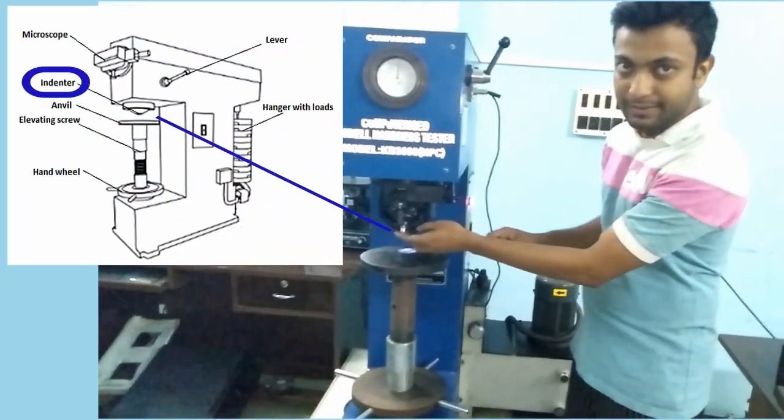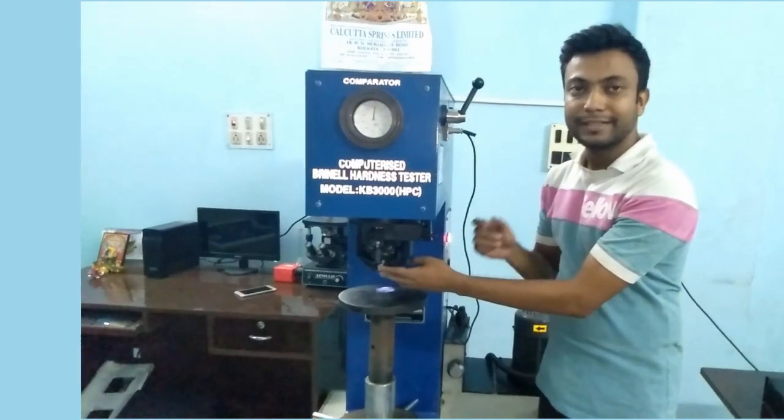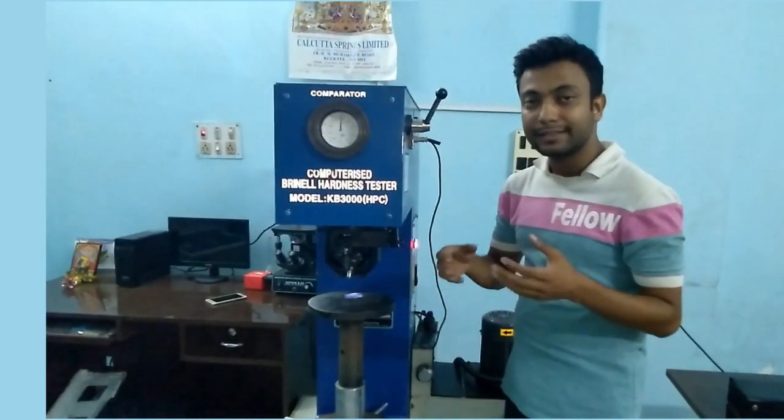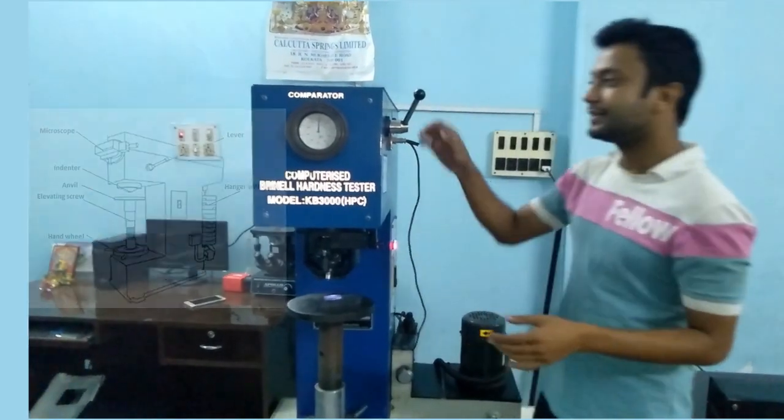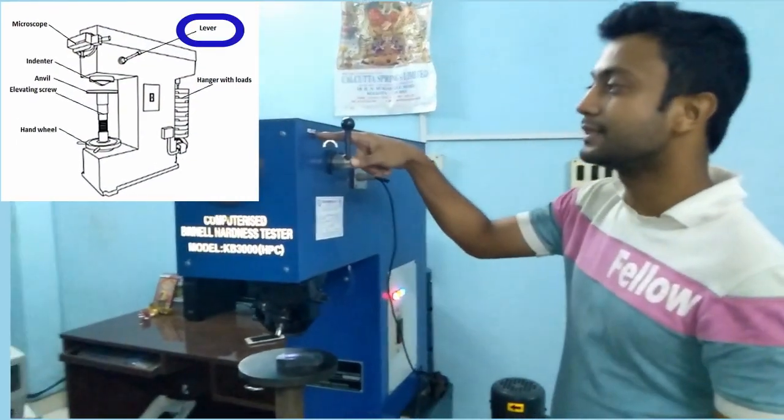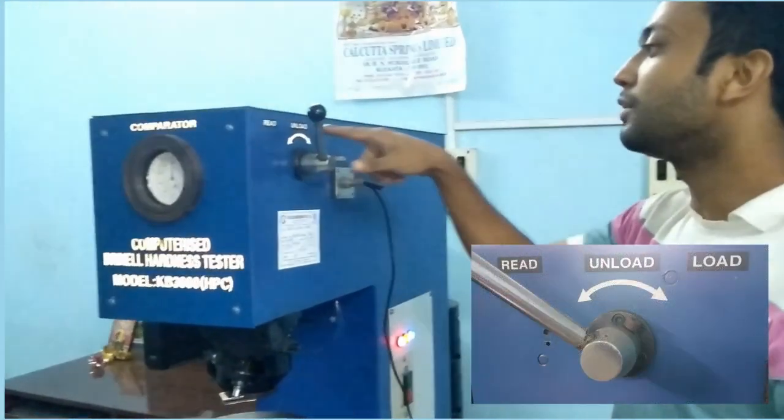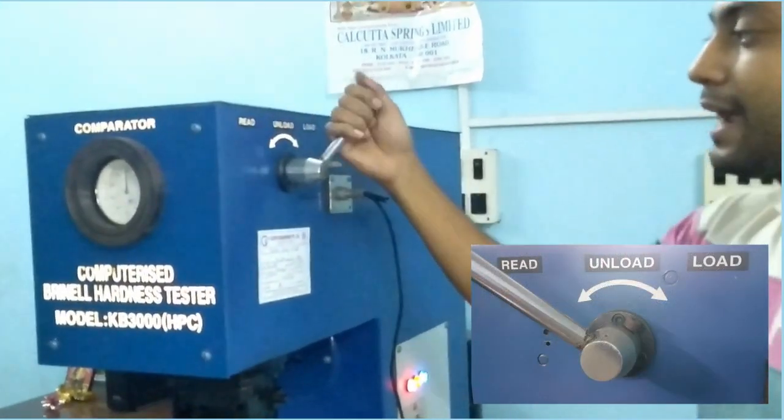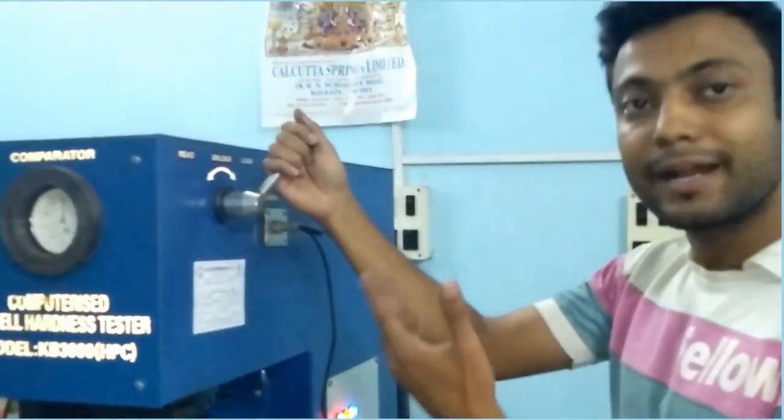This is indenter. There are different types of indenter. I will tell you about the indentation process and indenters later. This is limber. You can see the three positions here: Load, unload and read. We can move it down and keep the load and unload here.